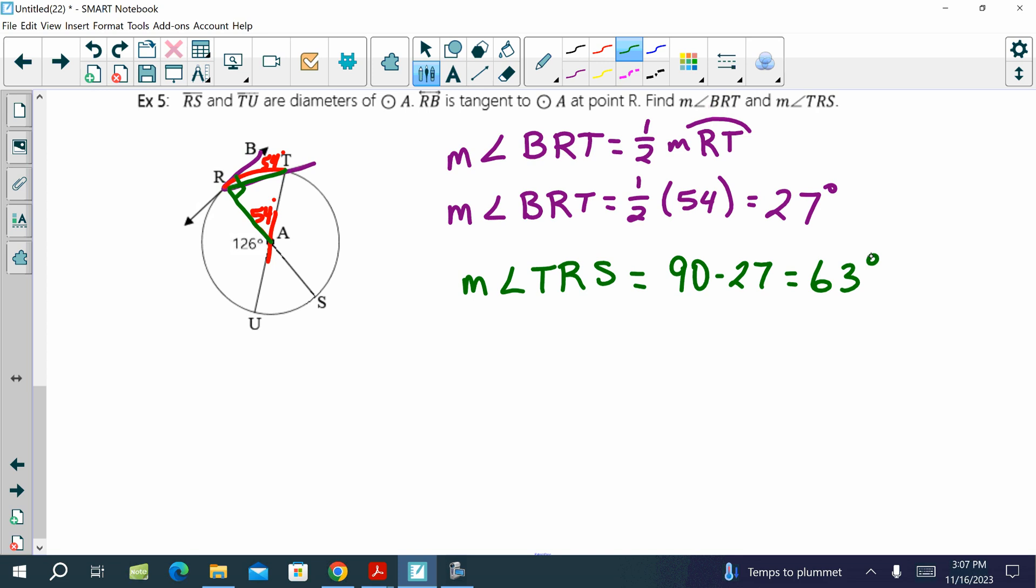So you worked backwards. So you knew vertical here. So you knew this was 126. And you did the TRS first as an inscribed angle? That's fine. You just worked a different way. Got the same answer? Very good. Any other questions on that one?